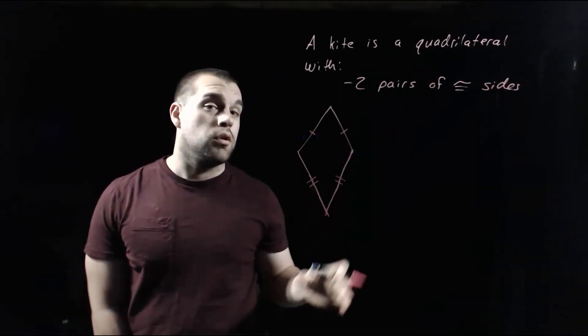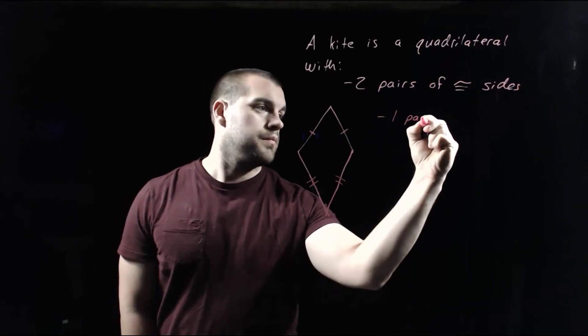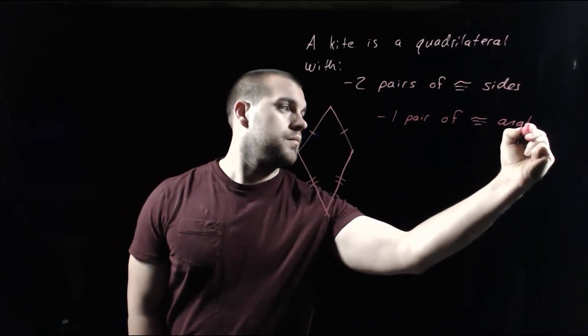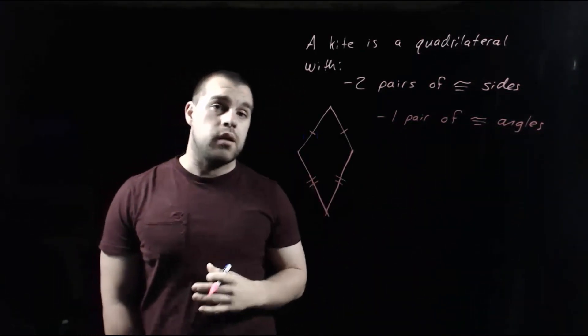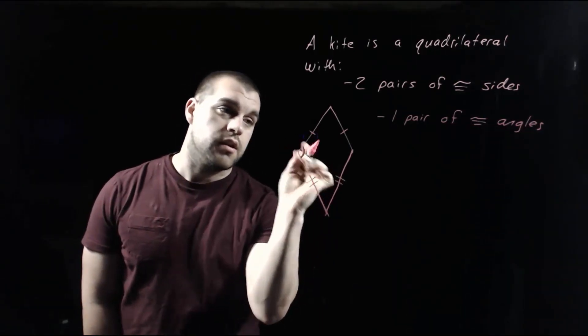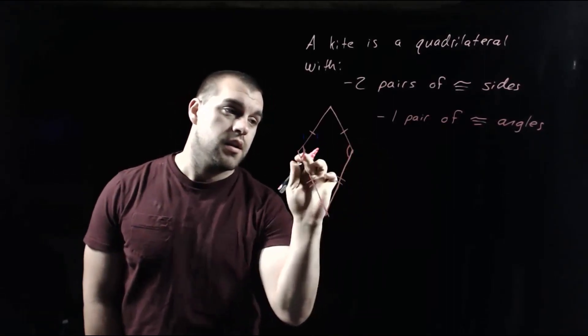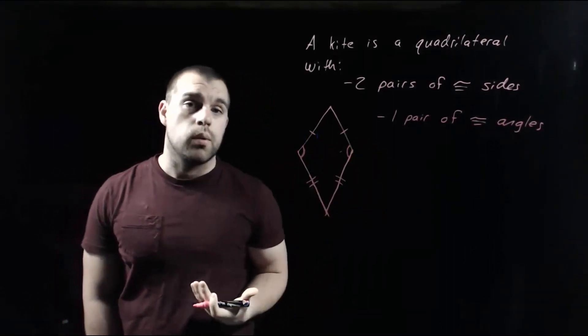Along with having two pairs of congruent sides, we're also going to have one pair of congruent angles. And the pair of congruent angles are going to be the ones that separate the non-congruent sides. So this obtuse angle in here is separating these two non-congruent sides, and same thing on the other side. Those two angles are going to be our congruent angles.